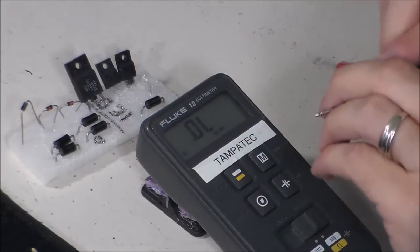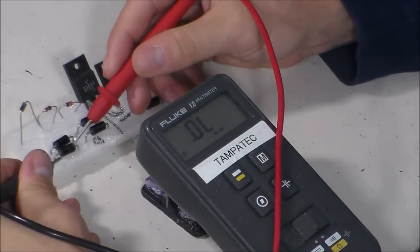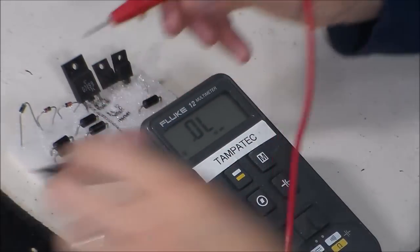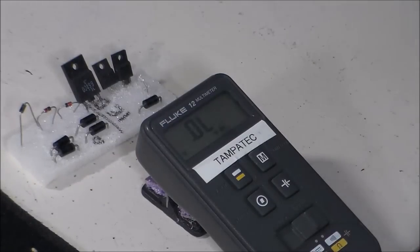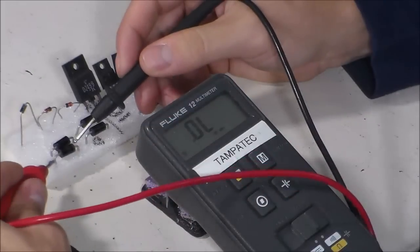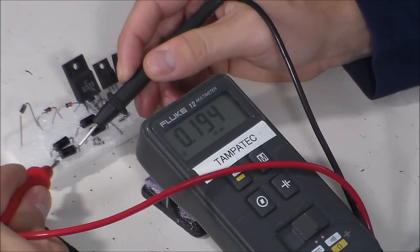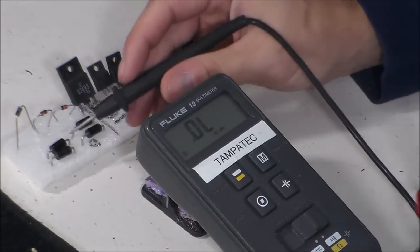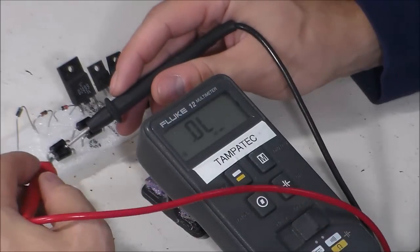Here's another diode right here below it. And I'm getting no reading this way. And put my black lead where the stripe side is, the cathode. And I'm reading 0.19. So I would replace that. 0.19 is too low. You want to replace that diode.